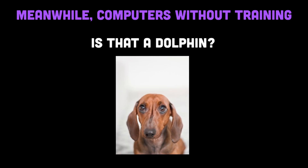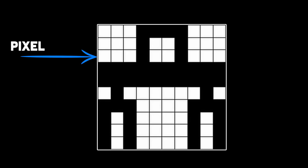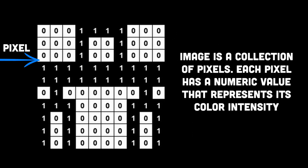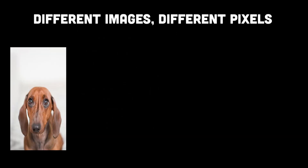When a computer sees an image, it actually sees a collection of pixels where each pixel stores a numeric value representing the color intensity. Therefore, a computer sees an image as a large array of numerical values.